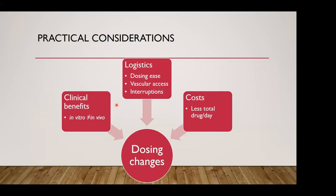The dosing adjustments involved in optimizing PK-PD targets can require considerable work, so practical considerations matter. In vitro PK-PD target attainment does not always translate 100% to in vivo outcomes, so clinical outcomes data must be considered. Benefits tend to be most evident in critically ill ICU patients or those with significant pharmacokinetic alterations — such as critically ill patients or those with obesity — where normal dosing deviates significantly and optimization of PK-PD targets is warranted.